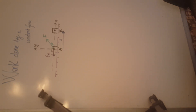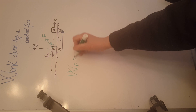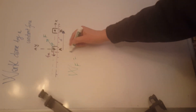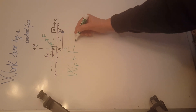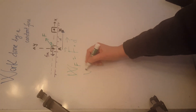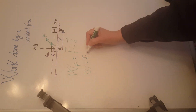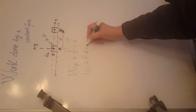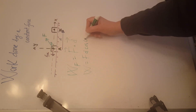First, let's calculate the work done by force F. According to the definition of work done by a constant force, this is the dot product between the force vector and the displacement vector. This equals the magnitude of the force times the magnitude of the displacement times the cosine of the angle between them, which in this case is theta.